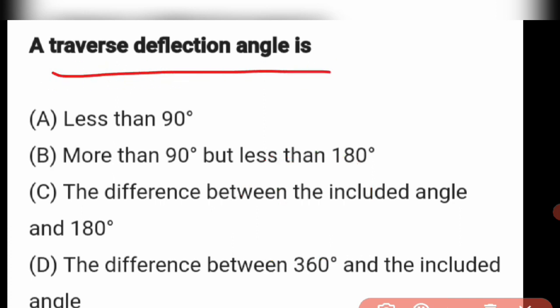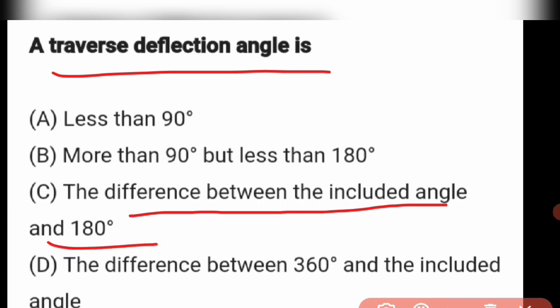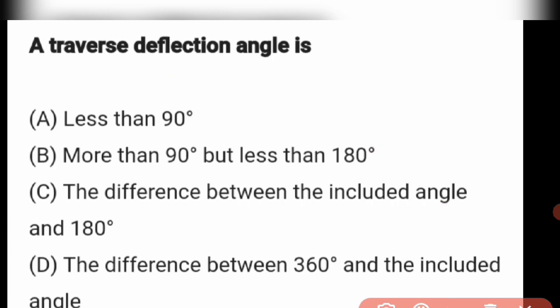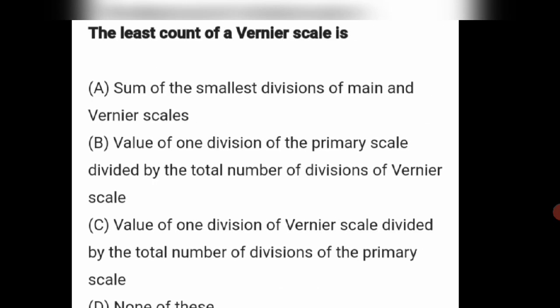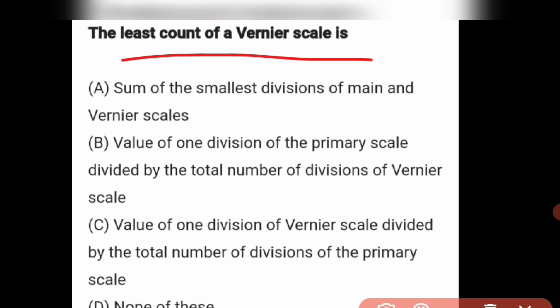Next question: A transverse deflection angle is — less than 90 degrees, more than 90 degrees but less than 180 degrees? The answer is it is the difference between the included angle and 180 degrees. Option C is the right answer.